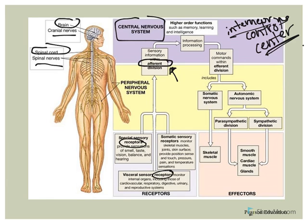Once the CNS determines what to do, it tells certain effectors what to do by carrying that information away from the central nervous system — think of 'E' for exiting — via an efferent division. So the afferent division is sensory, and the efferent division is motor.